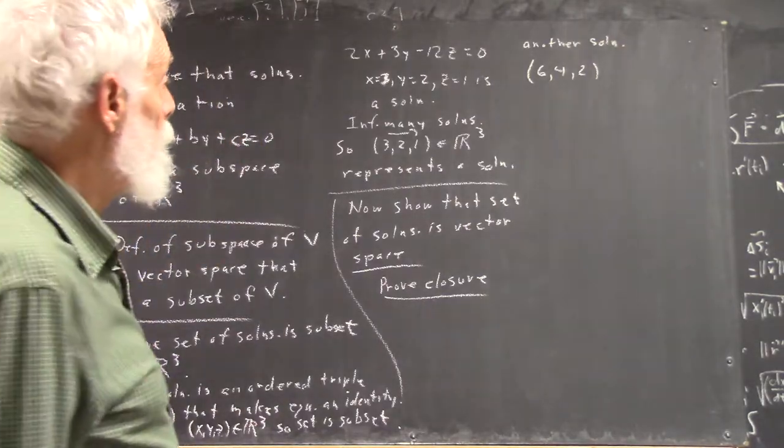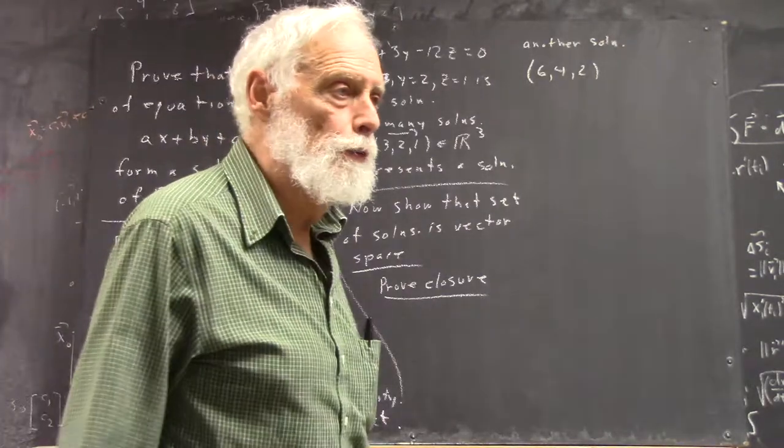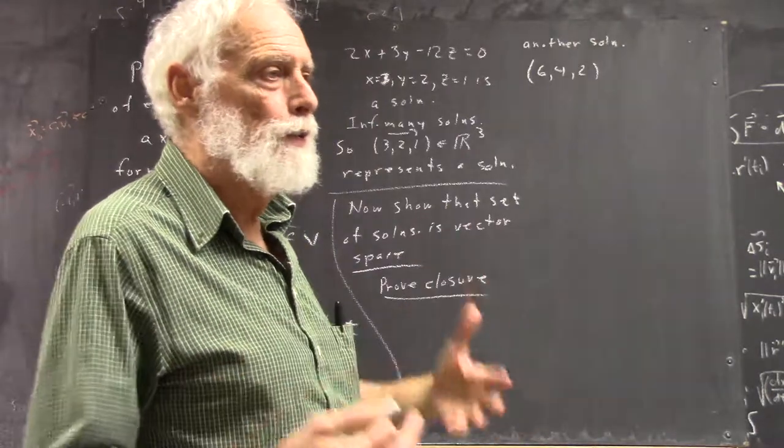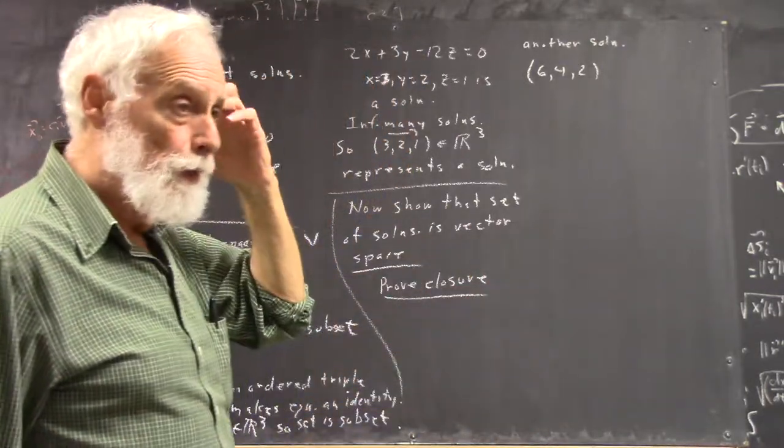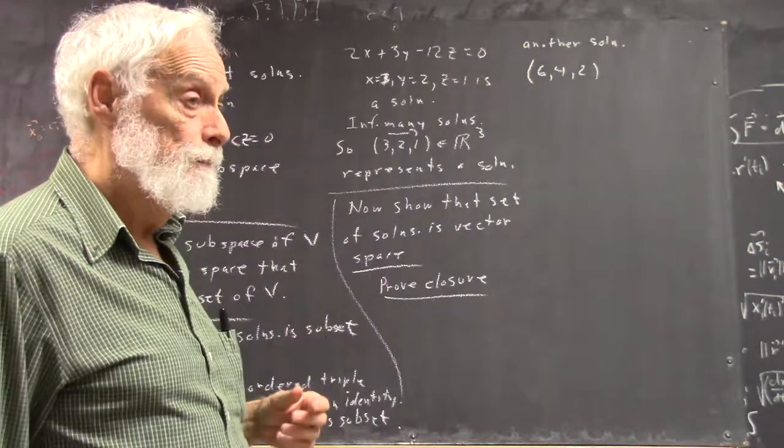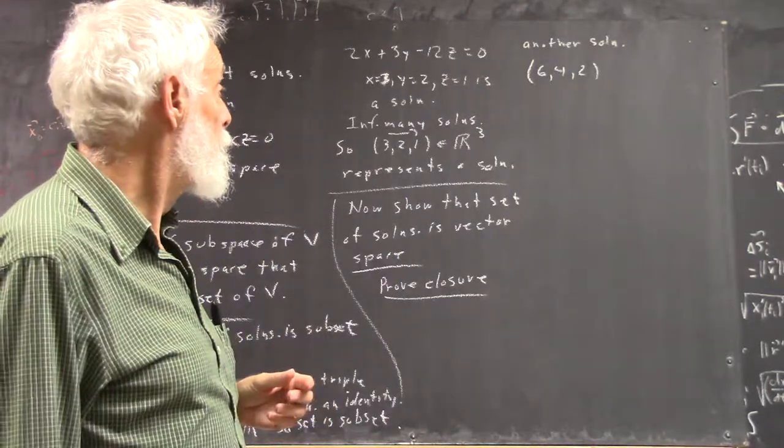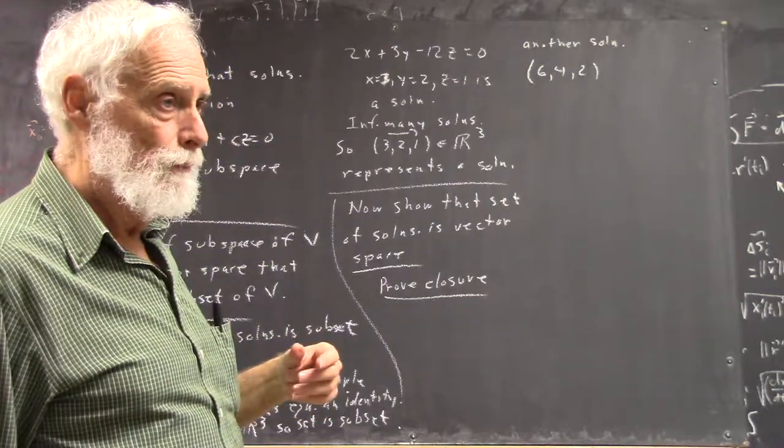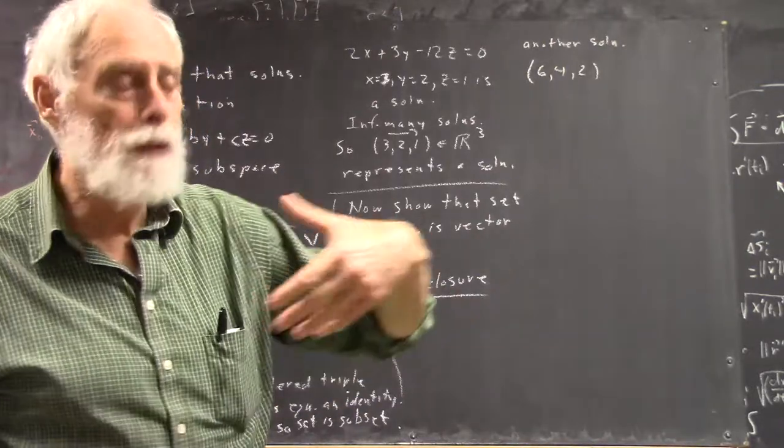So what does it mean if this is closed? If we know that the set is closed, if we've proven this, what can we then conclude? That if you add the two solutions together, you still get a solution. Yeah, if you add two solutions, you get a solution. Very good.